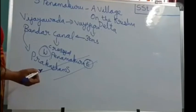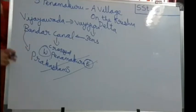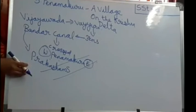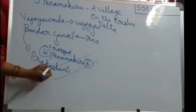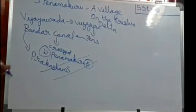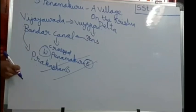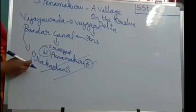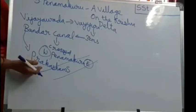This Prakasham Barrage is built at Vijayawada on the Krishna River. This dam was built by the British in 1853, built by Arthur Cotton. After independence, in the name of Sri Tunguturi Prakasham Garu, on his name this dam was named Prakasham Barrage. Even now the name remains Prakasham Barrage.